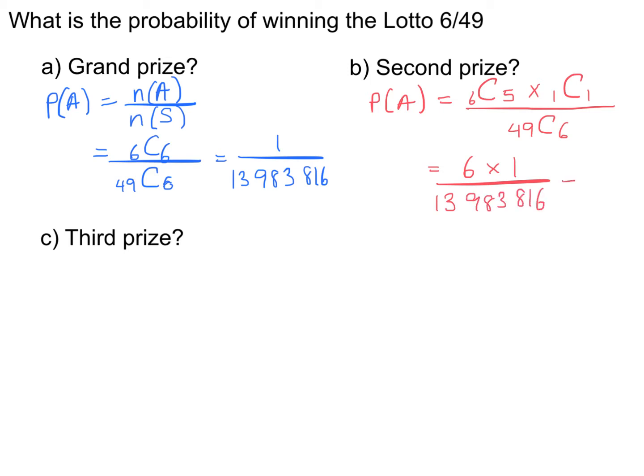Doing the math, that's just 6 on top, which reduces to 1 out of 2,330,636.